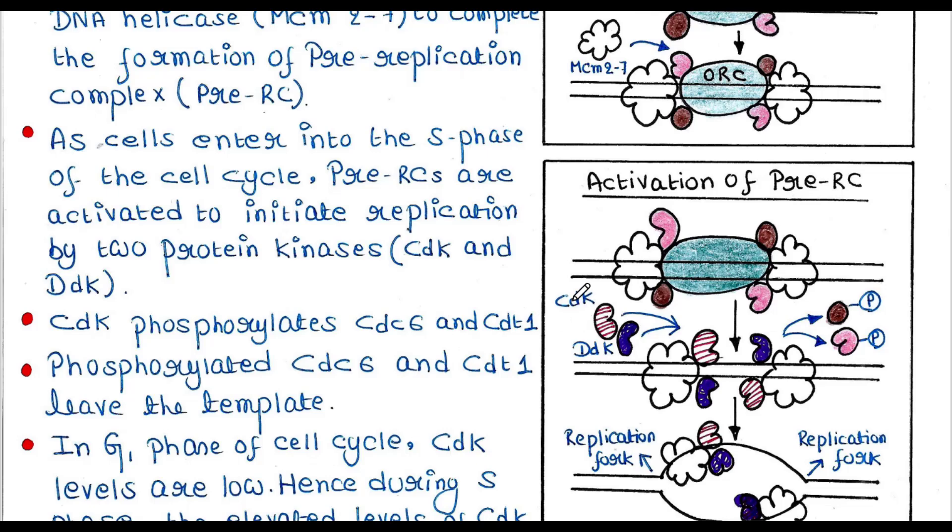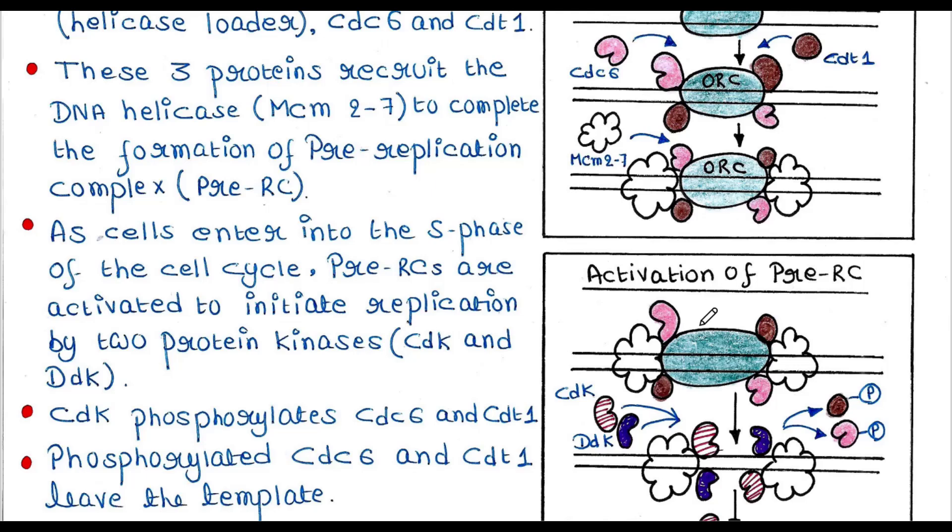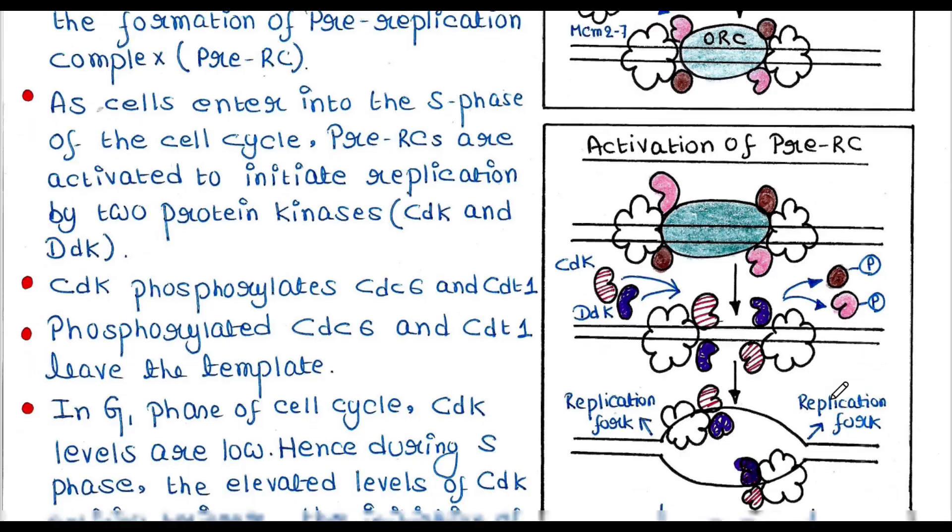Now CDK phosphorylates CDC6 and CDT1. These two proteins are now phosphorylated by CDK. Now phosphorylated CDC6 and CDT1 are leaving the template. So once CDC6 and CDT1 are phosphorylated, they leave the template.